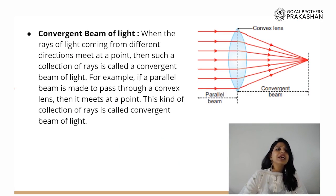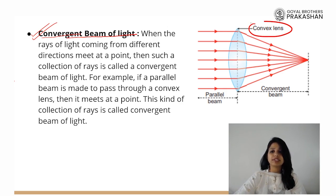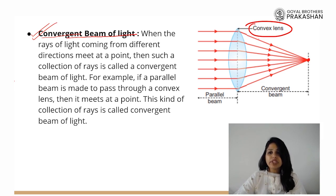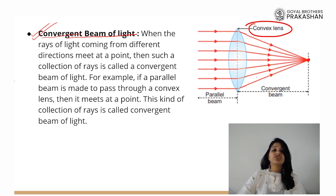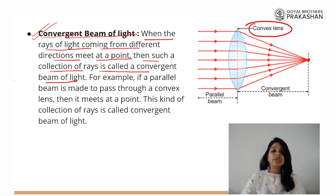What would be the opposite of divergent beam? Convergent beam of light. A convergent beam of light is when rays of light coming from different directions meet at a point. For example, a convex lens makes all parallel rays bend at an angle so they all meet at a single point. When multiple rays come and meet at a single point, we call them a convergent beam. So if a parallel beam of light is made to pass through a convex lens, it meets at a point — this collection of rays is called a convergent beam.